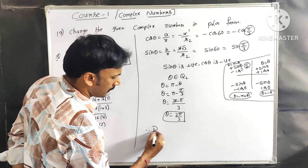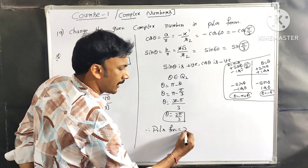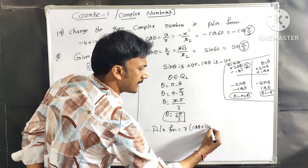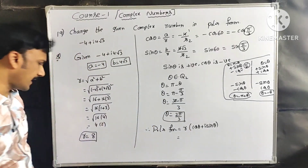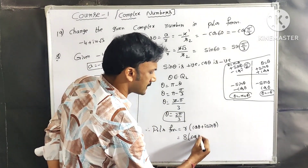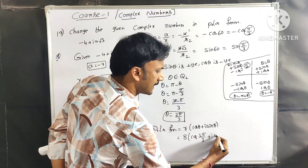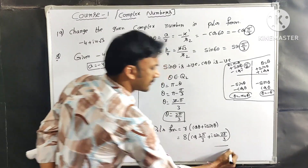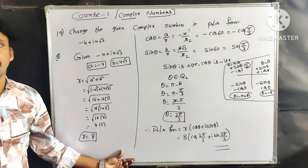Therefore, the polar form is r(cos θ + i·sin θ). With r = 8 and θ = 2π/3, the polar form is 8(cos(2π/3) + i·sin(2π/3)).